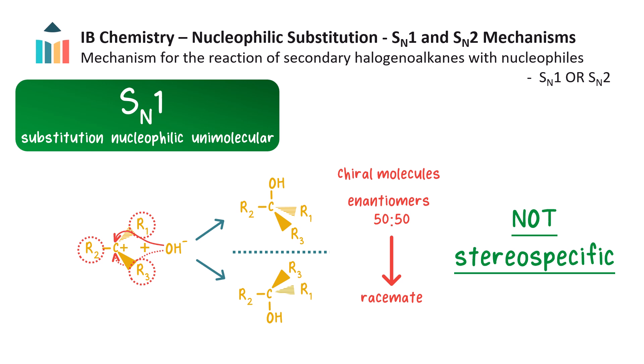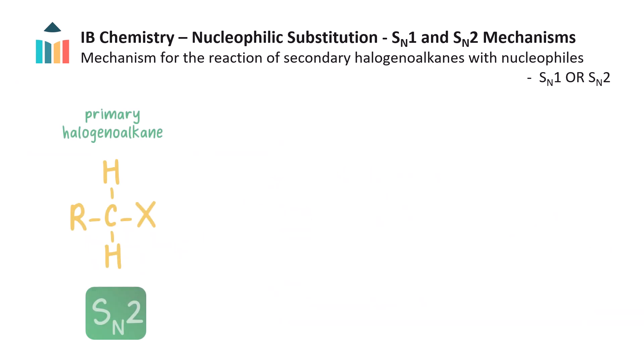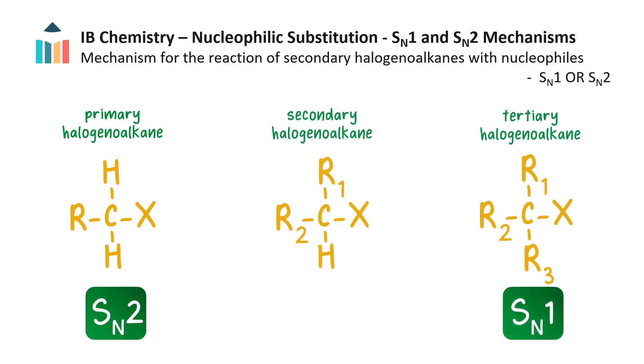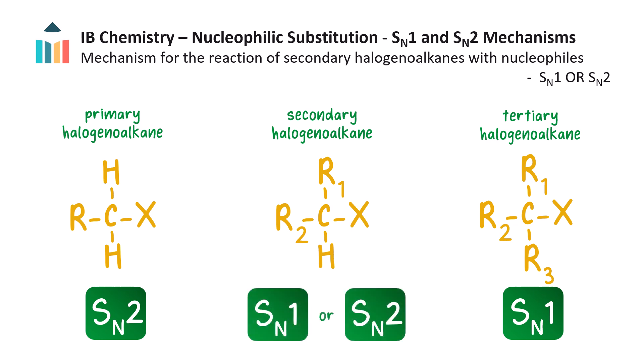If primary halogeno alkanes undergo SN2 reactions and tertiary undergo SN1, what mechanism occurs for a secondary halogeno alkane? Data from experiments shows that secondary halogeno alkanes undergo both SN1 and SN2 mechanisms, depending on the reaction conditions — namely the nature of the solvent, the strength of the nucleophile, and the type of leaving group.